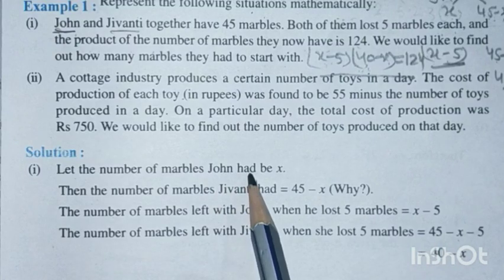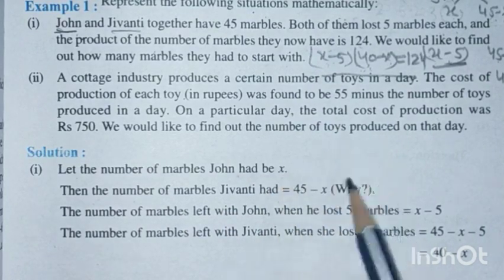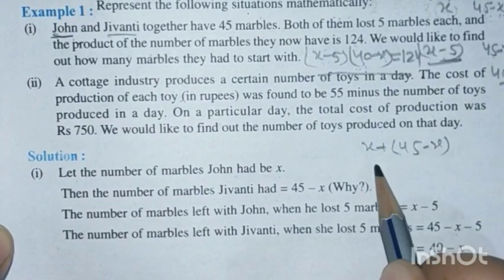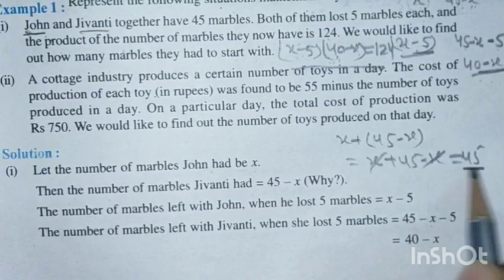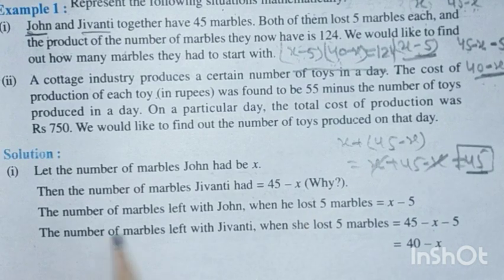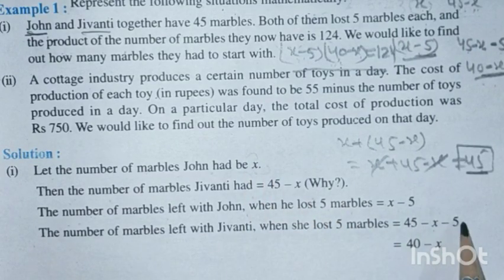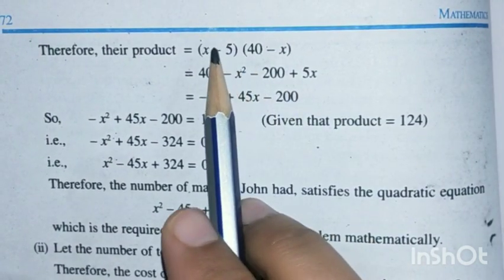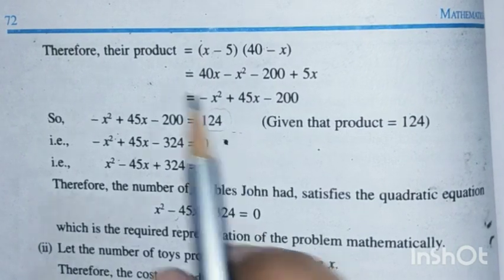Let the number of marbles John had be x. Then Jayvanti's marbles = 45 minus x, since x + (45 - x) = 45. After losing 5 marbles: John has x minus 5 remaining, and Jayvanti has 45 minus x minus 5 = 40 minus x remaining. According to the condition, the product of their remaining marbles equals 124: (x - 5)(40 - x) = 124.